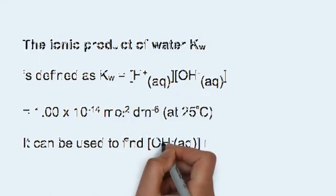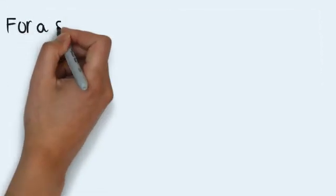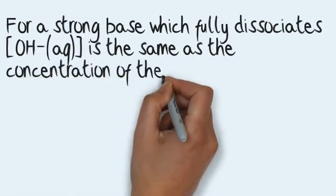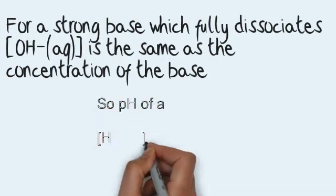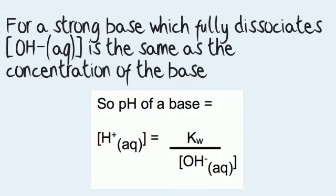The ionic product of water, Kw, is defined as: Kw equals the concentration of H⁺ ions times the concentration of OH⁻ ions, and this equals 1.00 × 10⁻¹⁴ mol² dm⁻⁶ at 25°C. This is stated in your datasheet. It can be used to find the concentration of OH⁻ ions if the concentration of H⁺ ions are known. For a strong base, which fully dissociates, the concentration of OH⁻ ions is the same as the concentration of the base. To calculate the pH of a base, the concentration of H⁺ ions equals Kw divided by the concentration of OH⁻ ions.